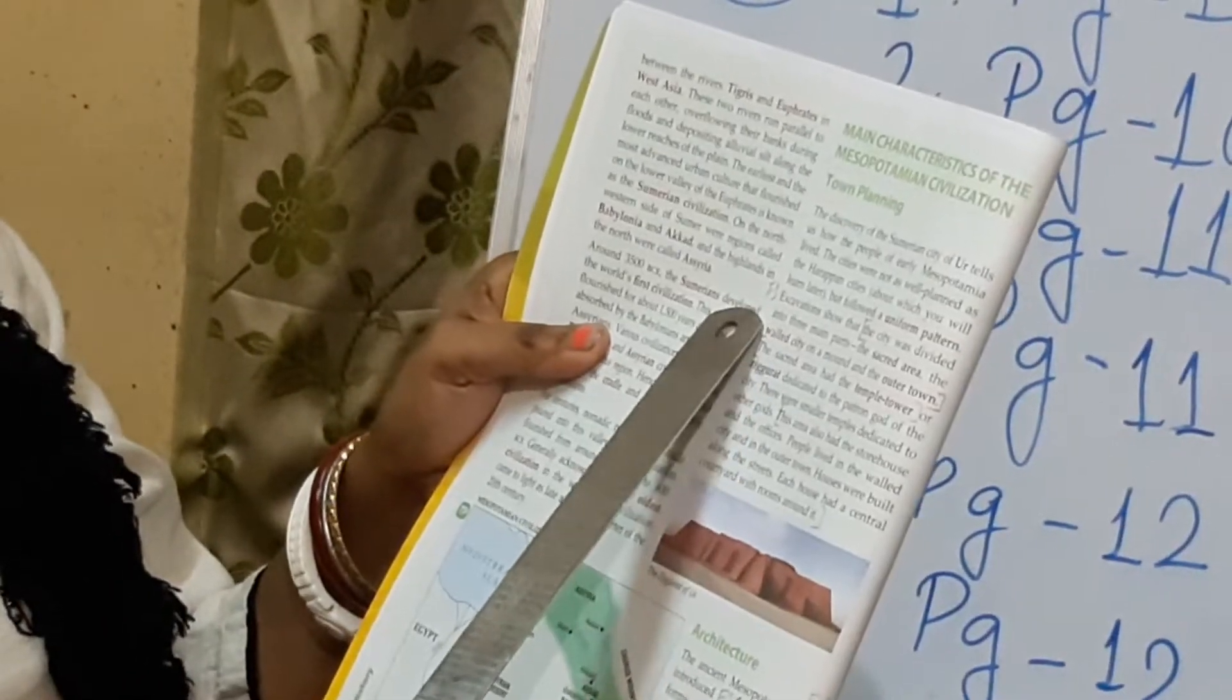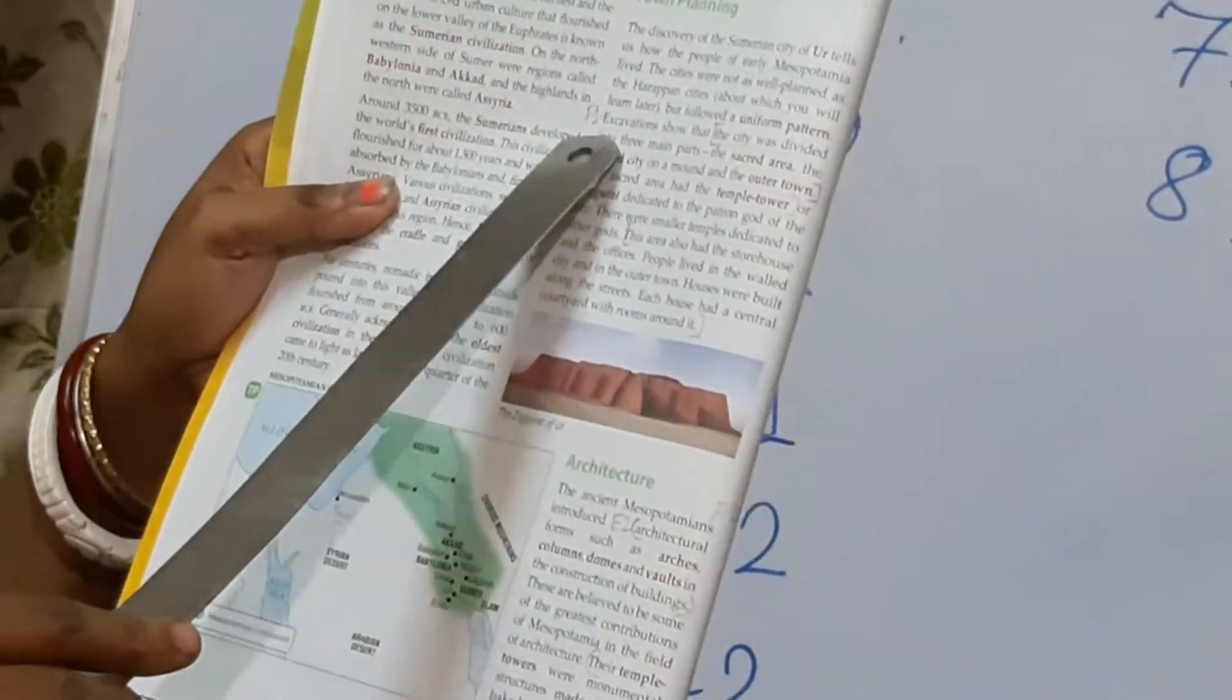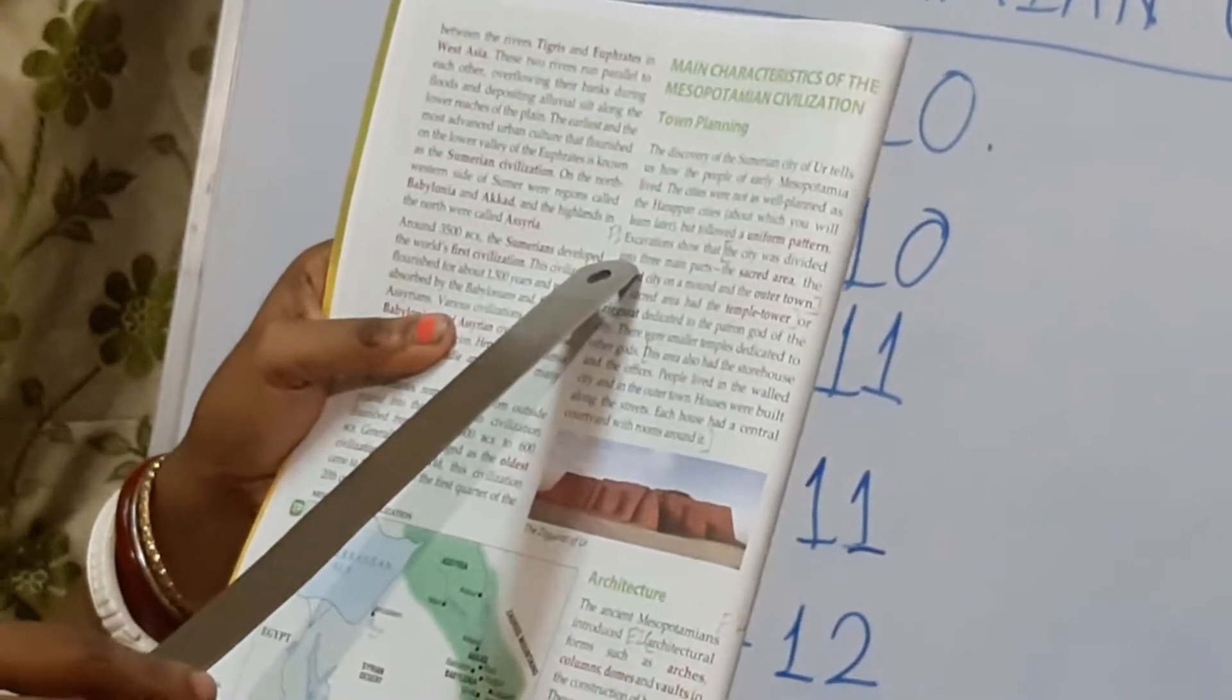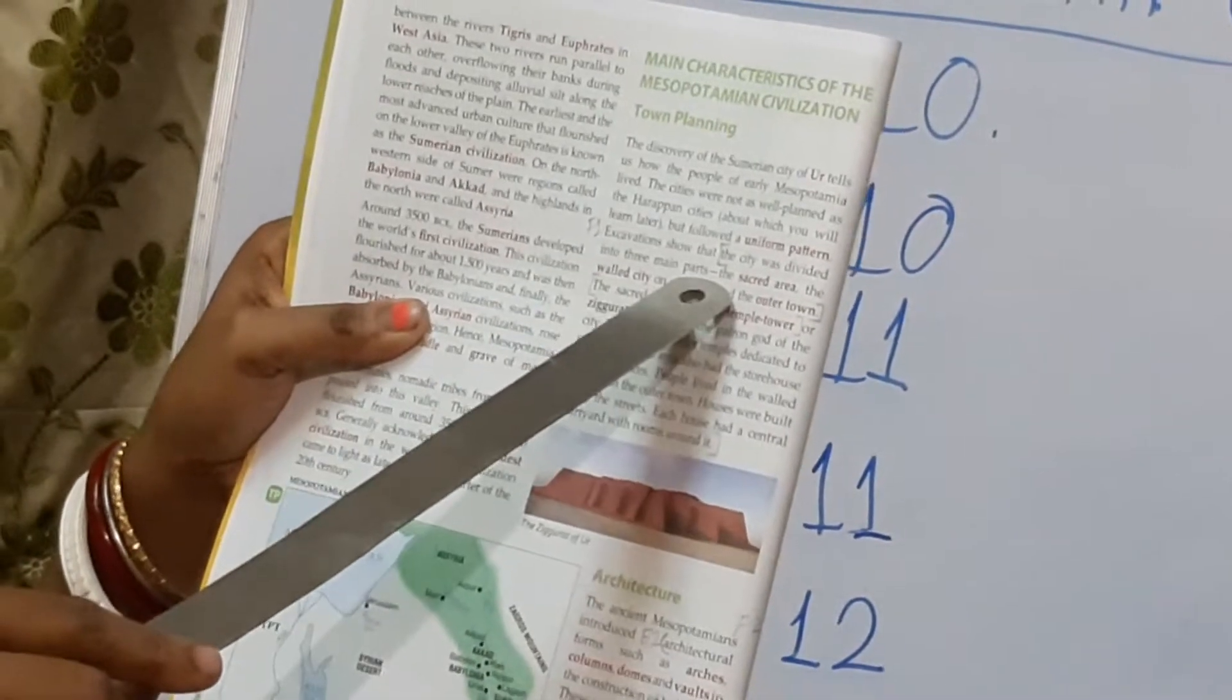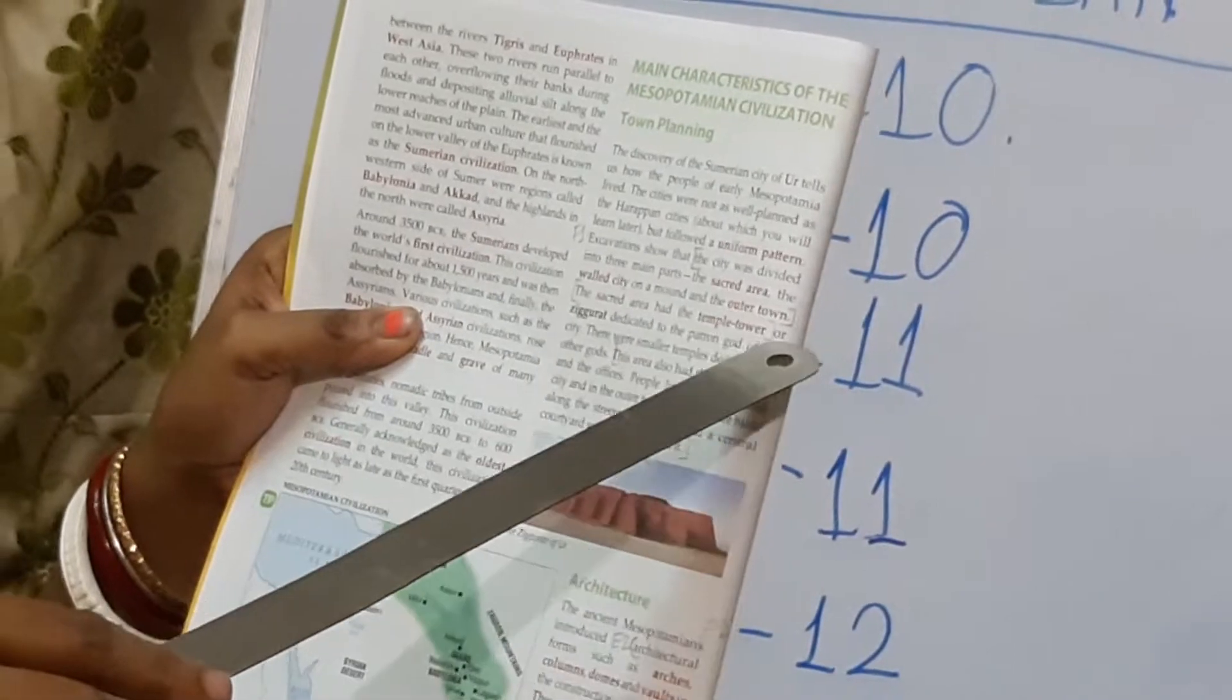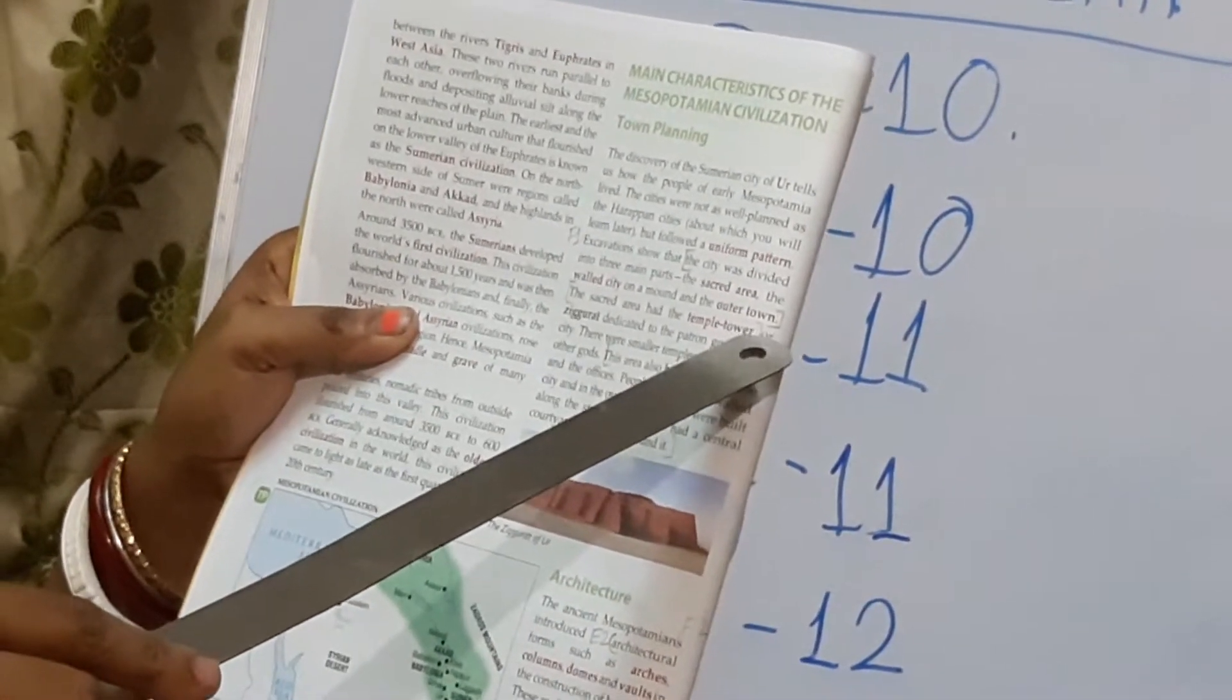Then you have to write it in your school history copy. What were the main features of town planning in Mesopotamia? You have to take out page number 10.